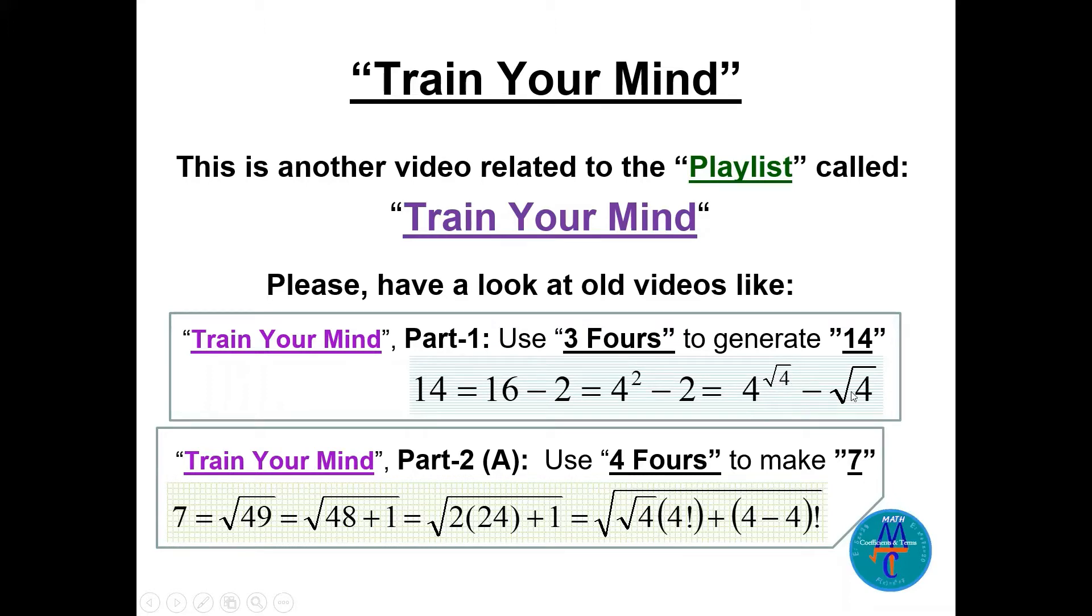This is three fours to make or generate 14. Another question in part 2a, there are many questions there actually. Let's use four fours to make 7. So I can start: 7 is equal to square root of 49.